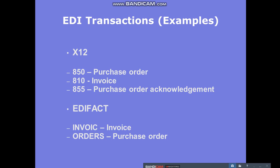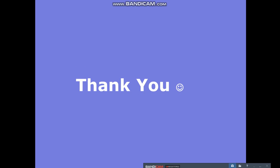Let's look at some common ANSI X12 EDI transactions. Transaction 850 is a purchase order, 810 is an invoice when you are receiving an invoice from a customer, and 855 is a purchase order acknowledgement. In EDIFACT, ORDERS is the transaction for purchase order, INVOIC is for invoice, and there are multiple other transactions like INCOMC and TRKCOMS used across industries.